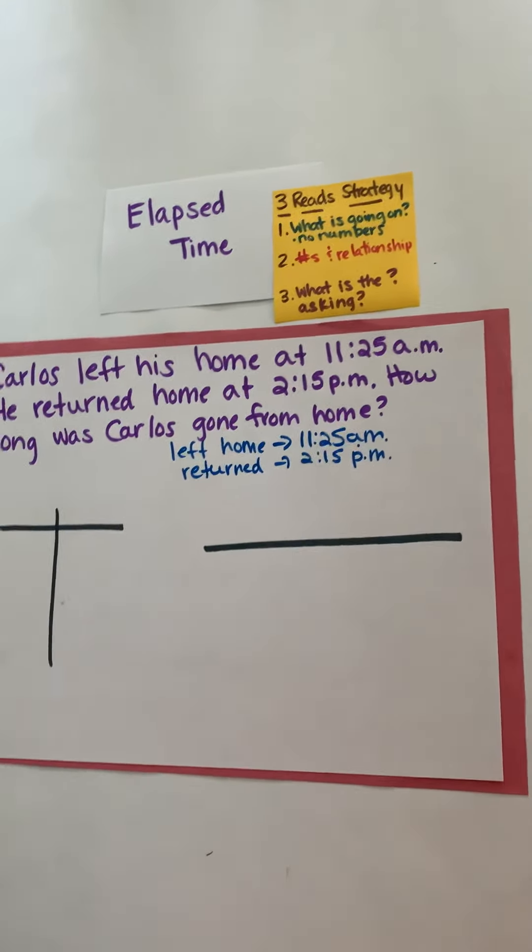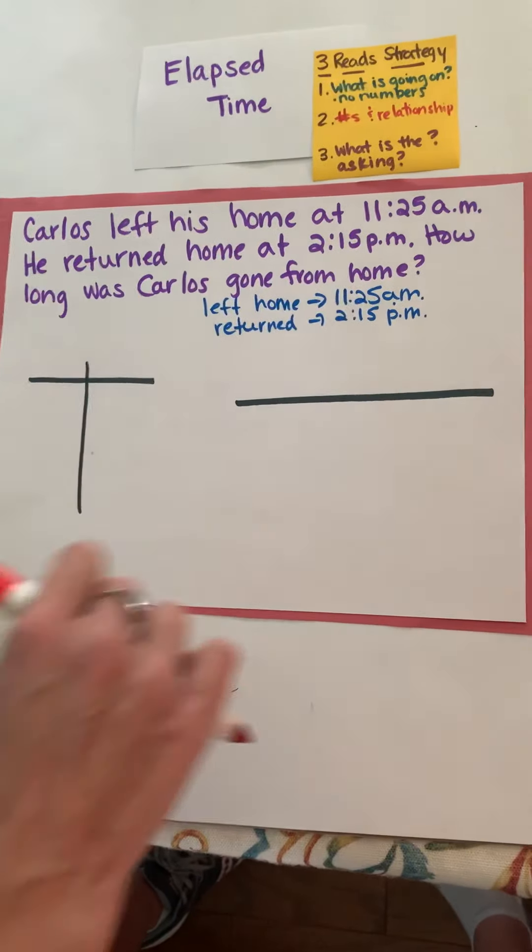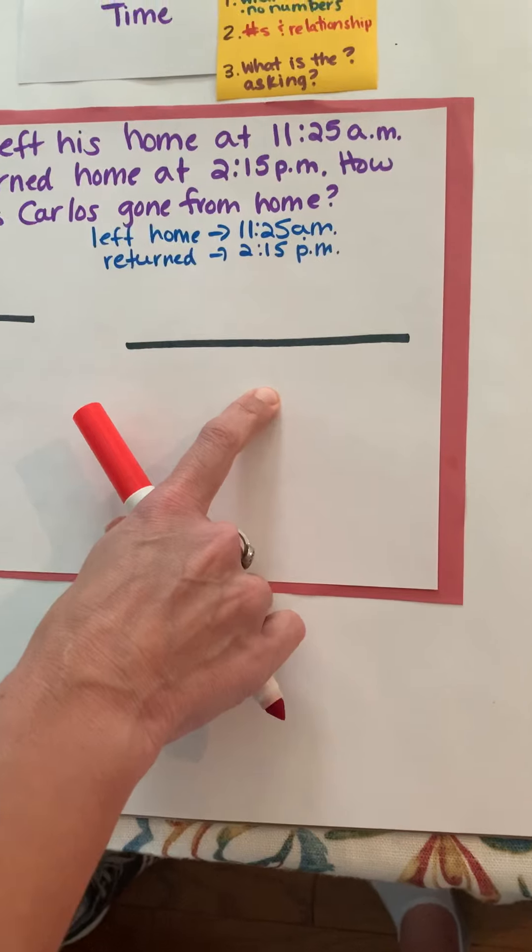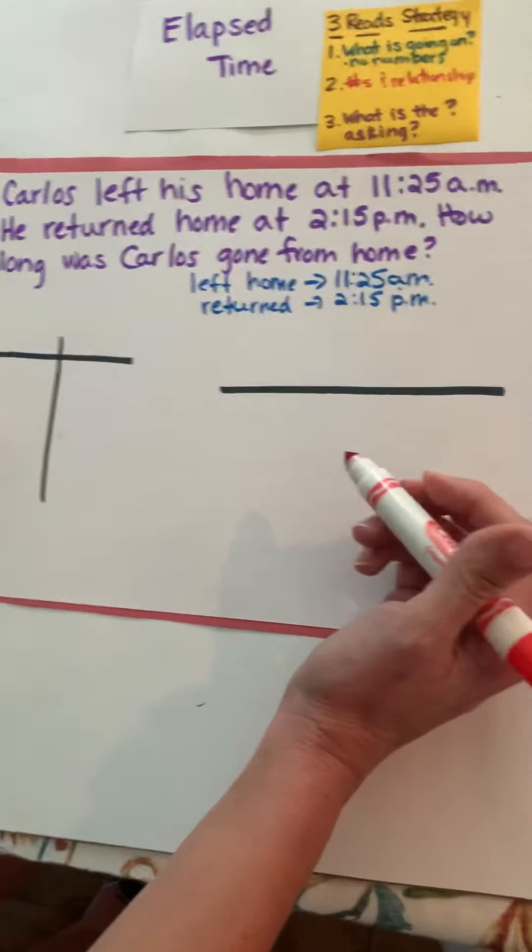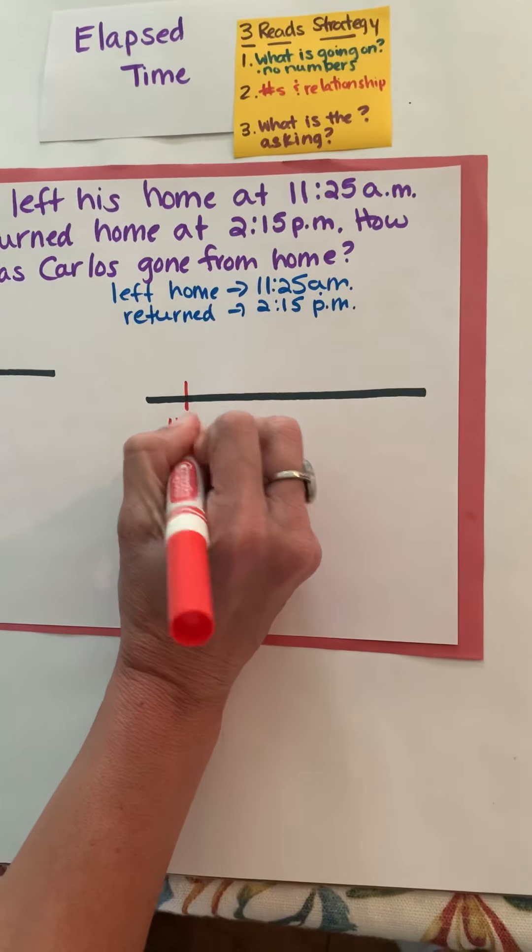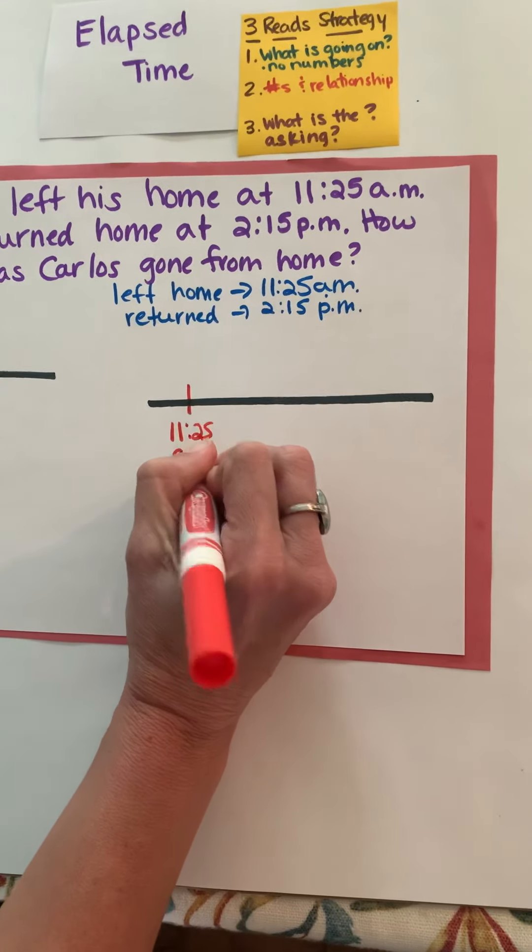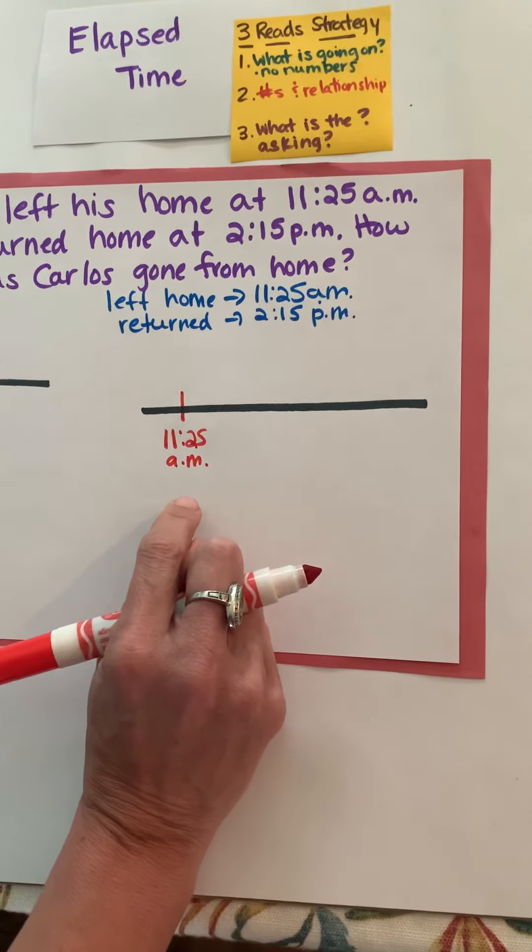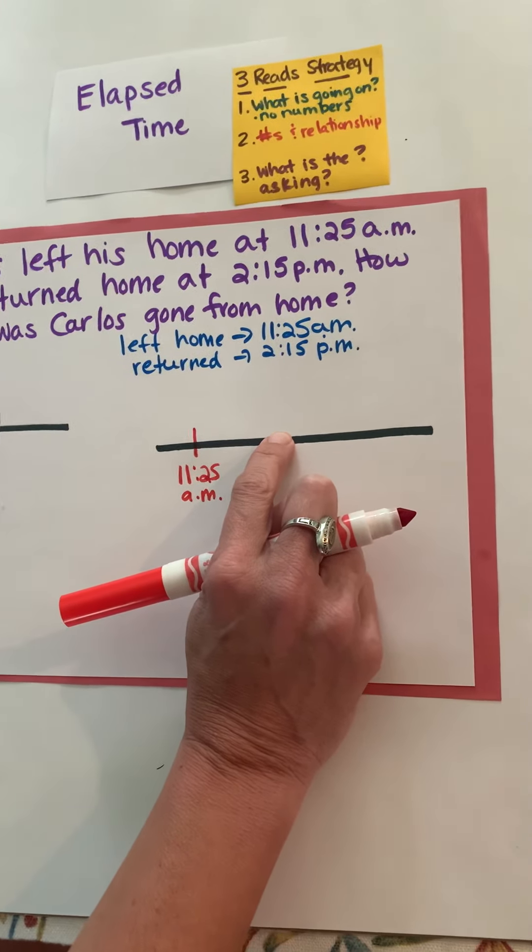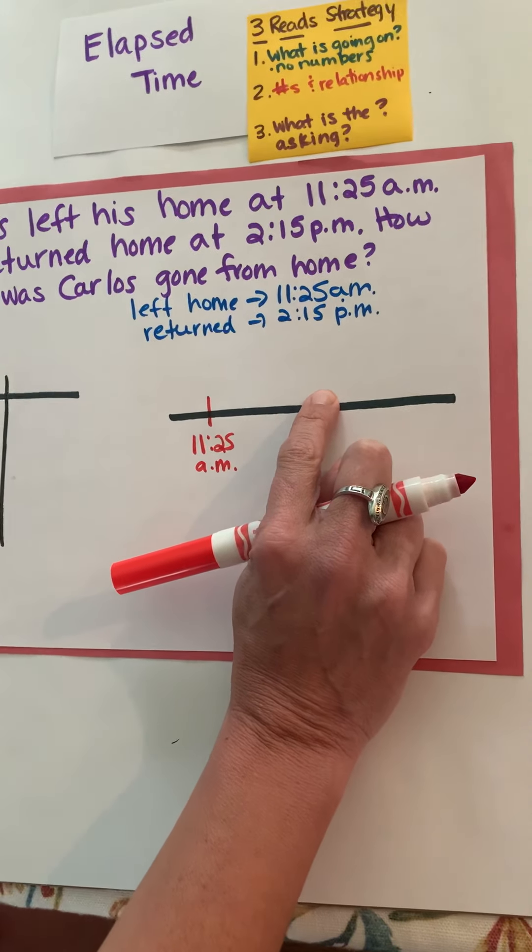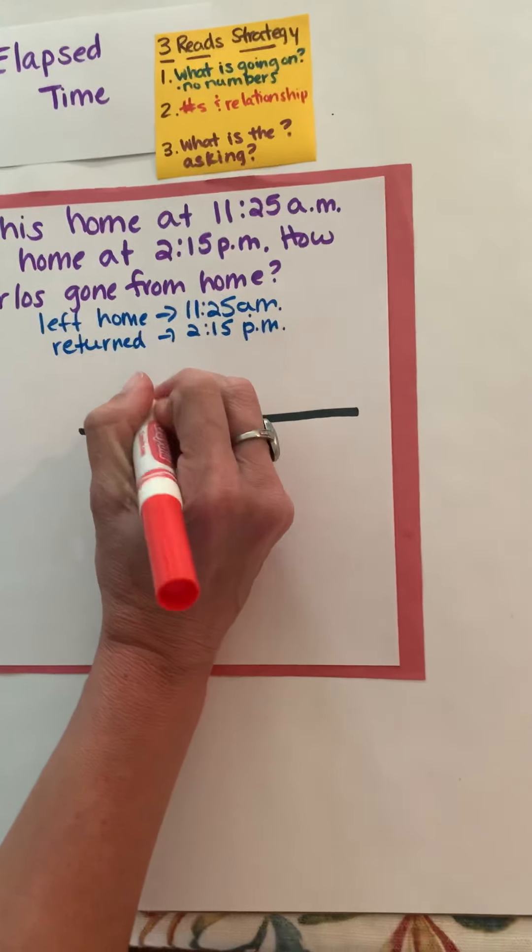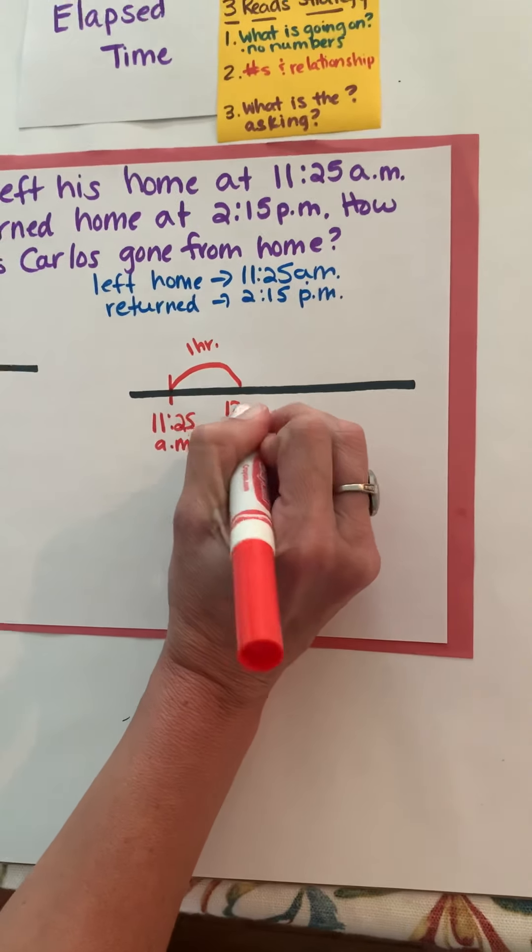So to be able to do that I am going to use first a number line and then we'll do the t-chart. So what I'm going to do is he left home at 11:25. So on this number line I'm going to represent 11:25 a.m. right here. Okay and there's different ways you can do this. I could jump up to 12 and see how many minutes or I could go ahead and go to 12:25 and go ahead and do the hour and I'm going to do that. I'm going to go ahead and jump one hour and I'm going to say it's 12:25.